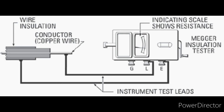There are two terminals of the megameter — positive and negative. Connect the positive terminal to the conducting wire and the negative to the insulated body. If the resistance is high, then the insulation is perfect. But if the resistance decreases, then the wire insulation may be damaged somewhere along the wire.